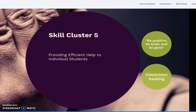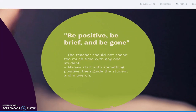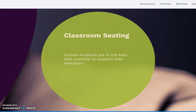In skill cluster 5, Jones discusses providing efficient help to individual students. He recognizes the importance of focusing on individual students but also acknowledges the need to be efficient given large class sizes. Teachers shouldn't spend too much time on any one student — we should guide them, give them steps, and be positive so they can progress their learning on their own. Additionally, placement of a student within the classroom can really determine their success or failure. Classroom seating is a very crucial part of classroom management strategy.